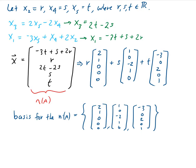Since there are three vectors in the basis — and remember the basis spans the space and those three vectors are linearly independent of each other — that dimension turns out to be three. That is the dimension of the null space.